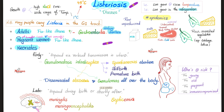Pregnant women get flu-like illness. When exactly? In the third trimester of pregnancy. Why? Because this part of pregnancy has the weakest T-cell immunity, and you need your T-lymphocytes — cellular immunity — to fight off Listeria.